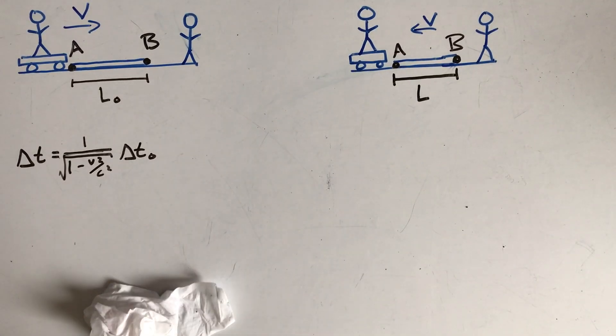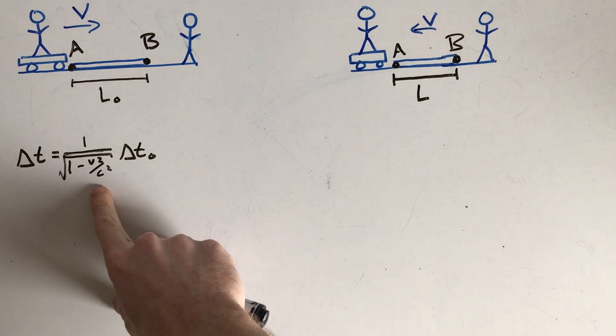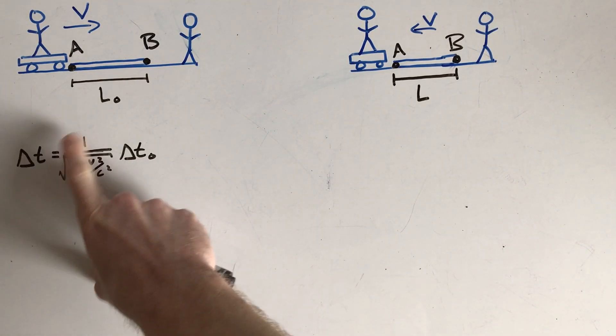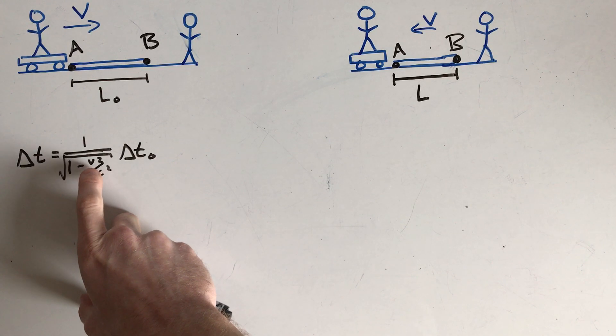All right, so in the last video I talked about time dilation and I derived the equation for time dilation. It looks something like this. This is referred to as gamma, and just sort of as an aside, gamma is always going to be bigger than 1. I probably should have talked about this a bit in the last video, but if you think about it...